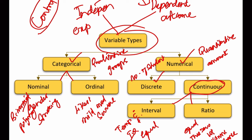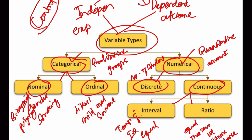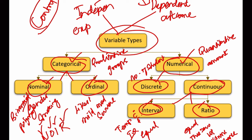So statistically, variables are broadly classified into categorical and numerical, under which we have nominal, ordinal, discrete, interval, and ratio. We can remember it as NOIR — nominal, ordinal, interval, and ratio. On the other hand, epidemiologically, we have the independent variable, otherwise called as the exposure variable, which determines or predicts the dependent variable, or the outcome variable.